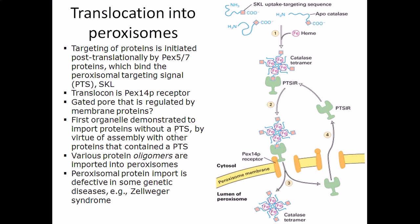Now let's talk about how proteins are translocated from the cytosol into another organelle like the peroxisome. The processes are similar in idea but slightly different, because the translocation into the peroxisome — just like for mitochondria and chloroplasts — occurs post-translationally, meaning after the protein is completely translated.